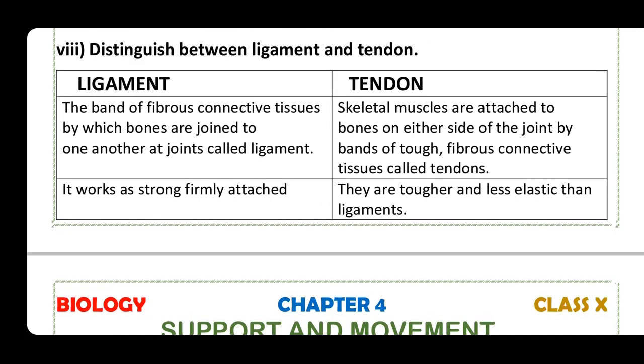Question: distinguish between ligament and tendon. A ligament is a band of fibrous connective tissue by which bones are joined to one another.